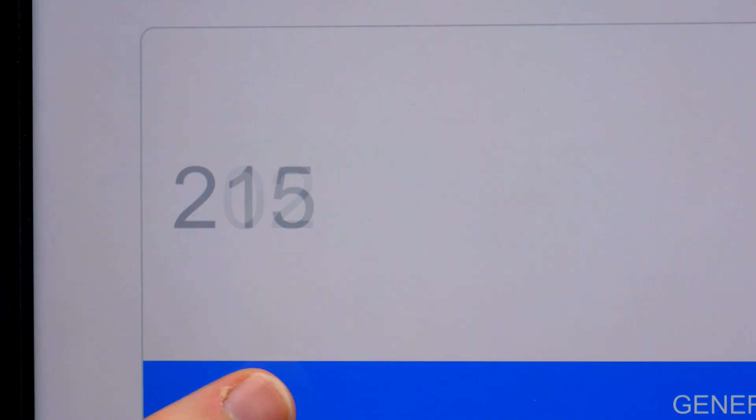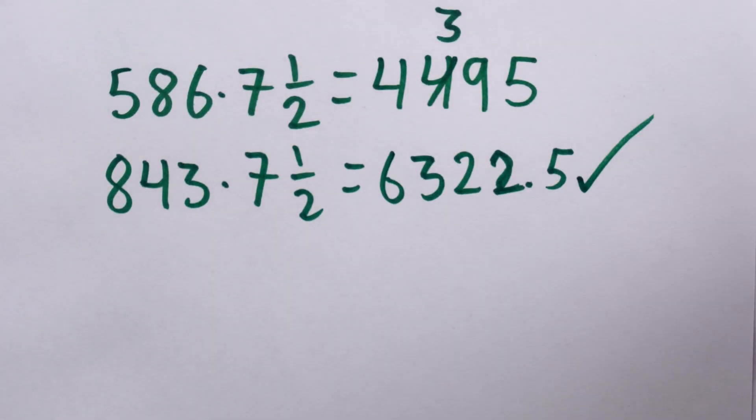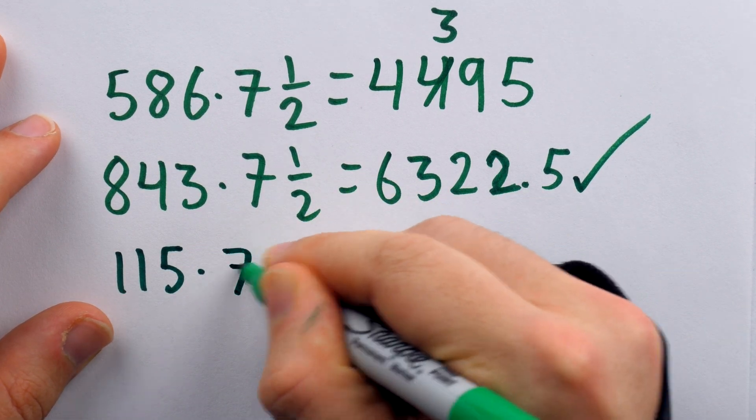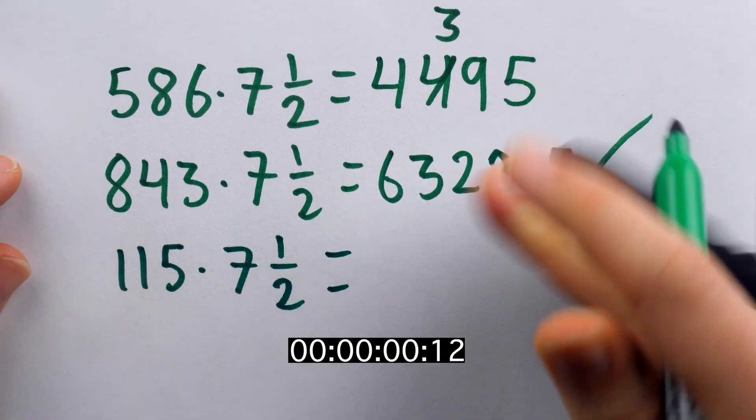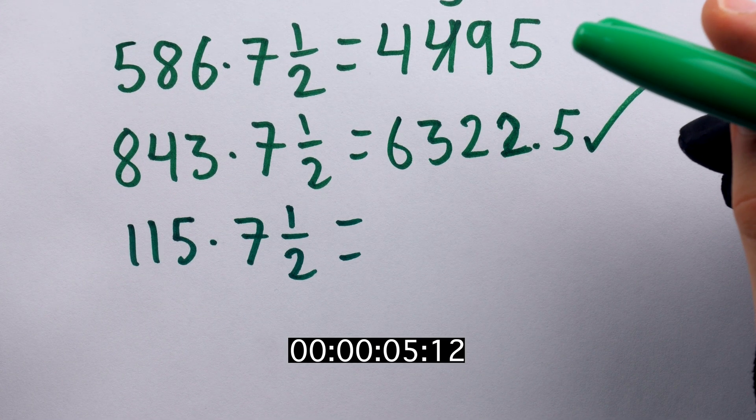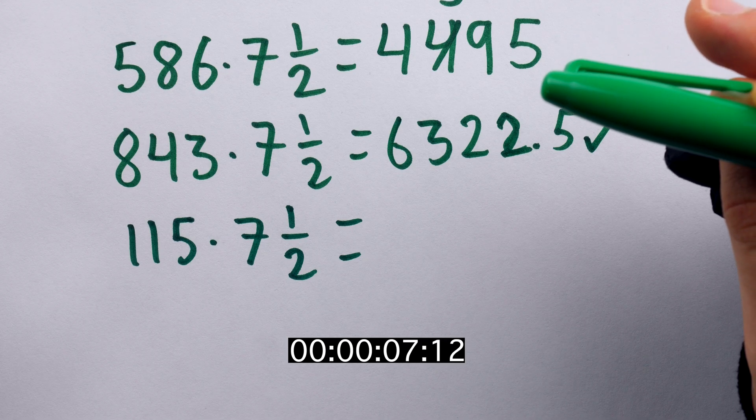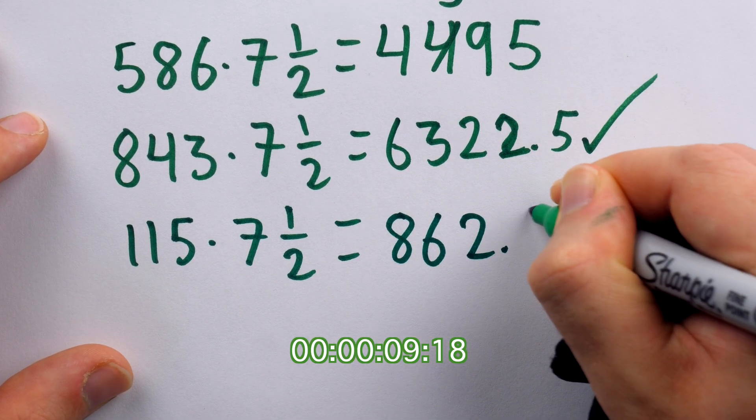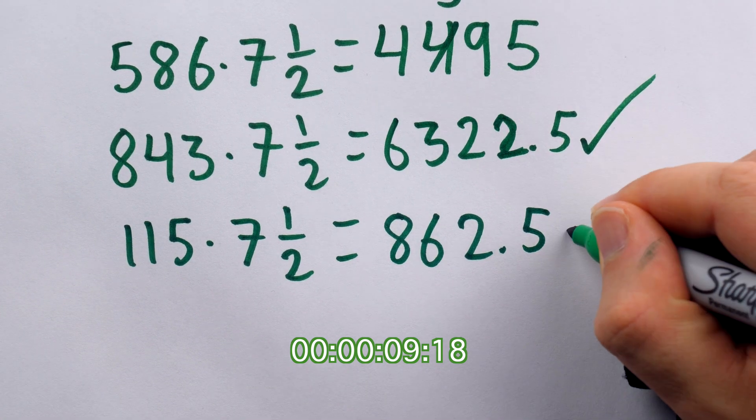For our last three-digit number, we have 115. Perfect, nice and easy. 115 times 7 and a half. 862 and a half. I tried to rush that one. Let's see. Is it right? That one is correct.